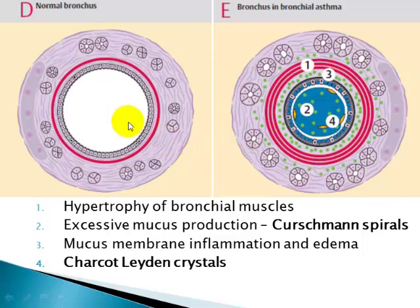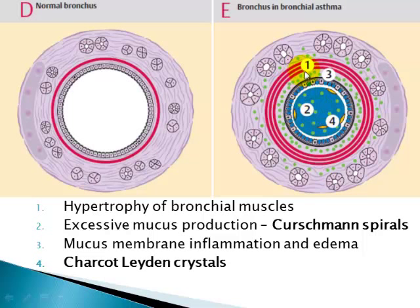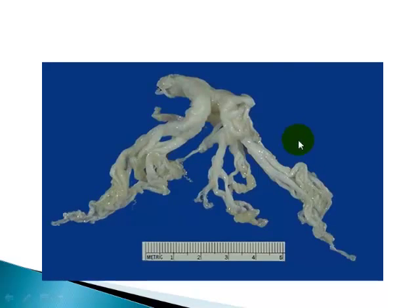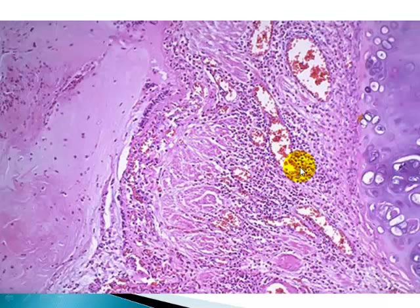A schematic representation shows a normal bronchial wall with epithelium, bronchial smooth muscle, and submucosal glands. In bronchial asthma, there is increased mucus production entirely occluding the lumen, hypertrophy of the bronchial smooth muscle, prominent inflammation seen as inflammatory infiltrate and edema, Charcot-Leyden crystals, and Curschmann spirals entangled within the mucus.